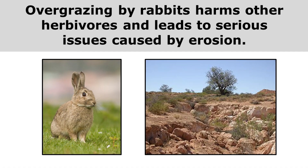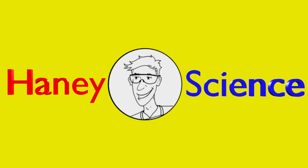The roots of plants actually hold on to soil. So when the rabbits eat all of the plants that are holding on to the soil, those plants die and that soil can be washed away, creating big problems as the soil erodes. I hope this video has helped you understand how changes to ecosystems can affect populations of organisms. Keep up the great work, and I'll see you next time.